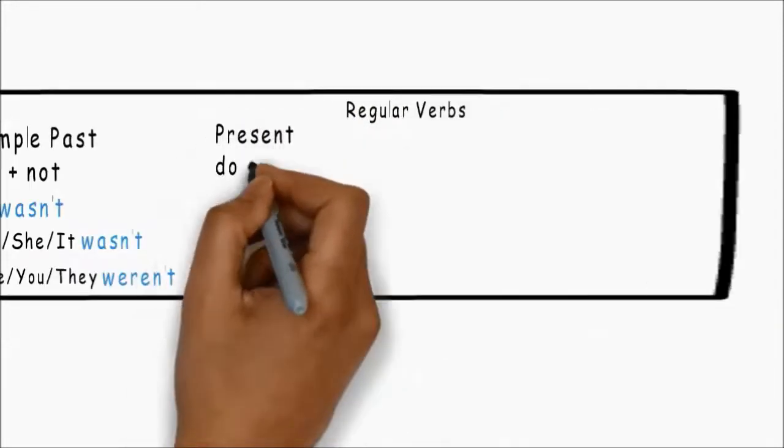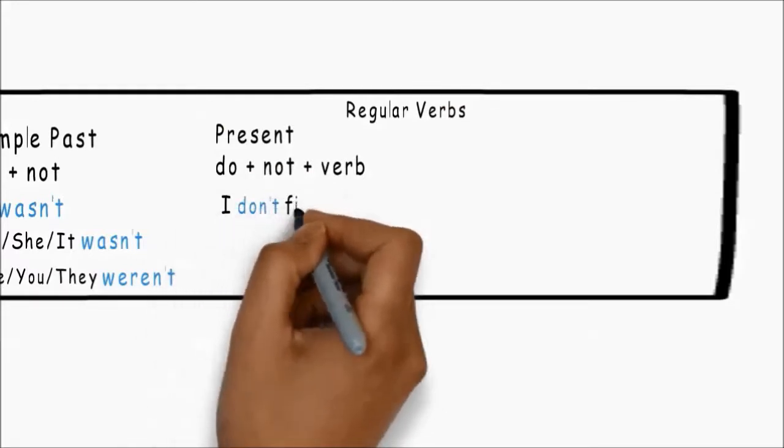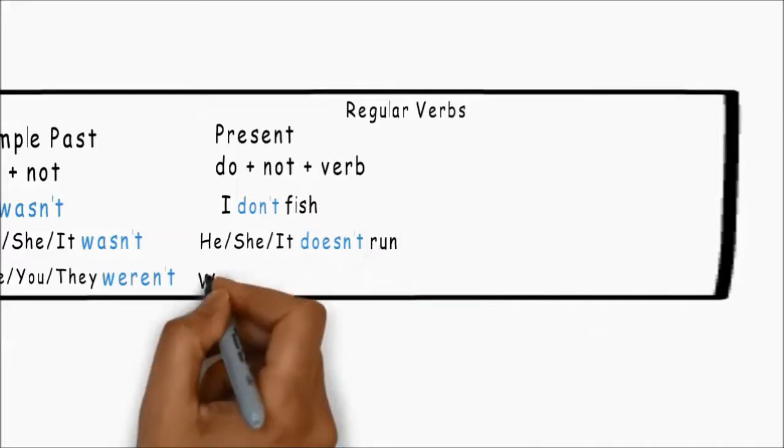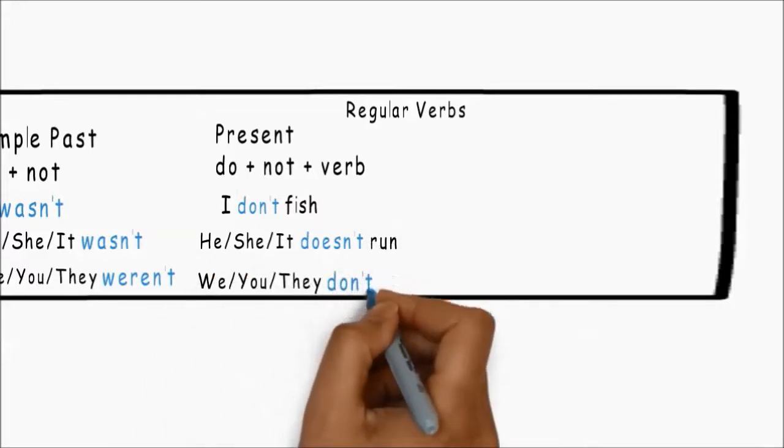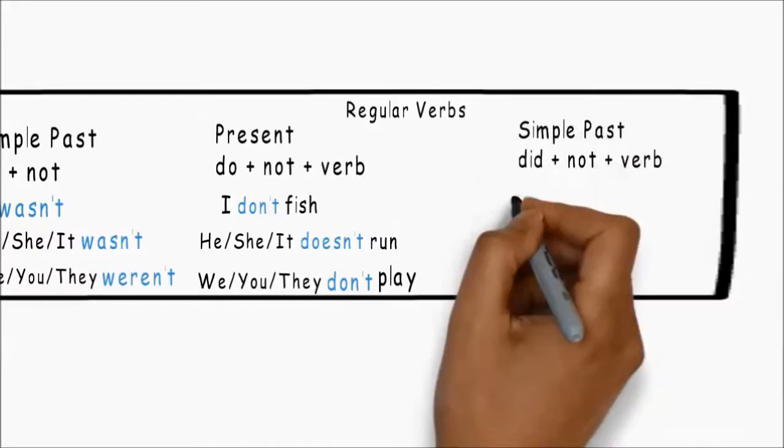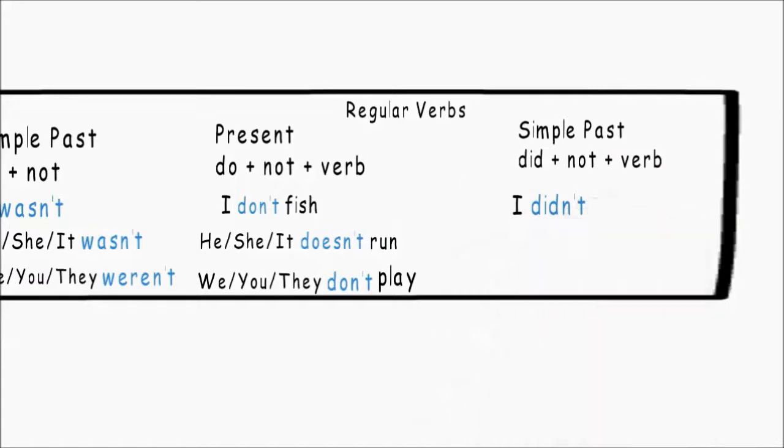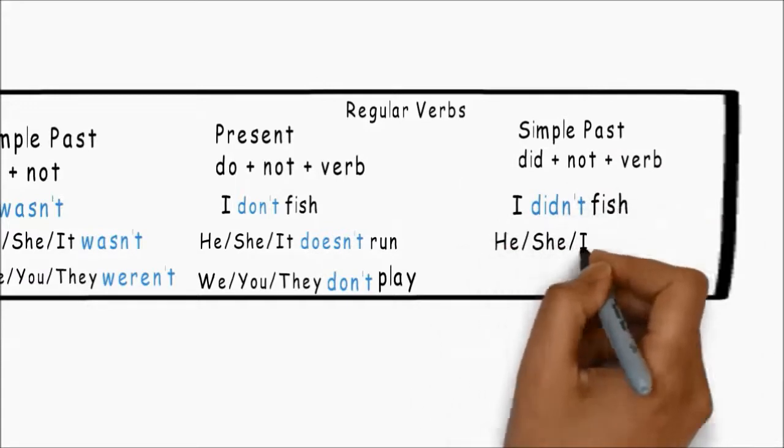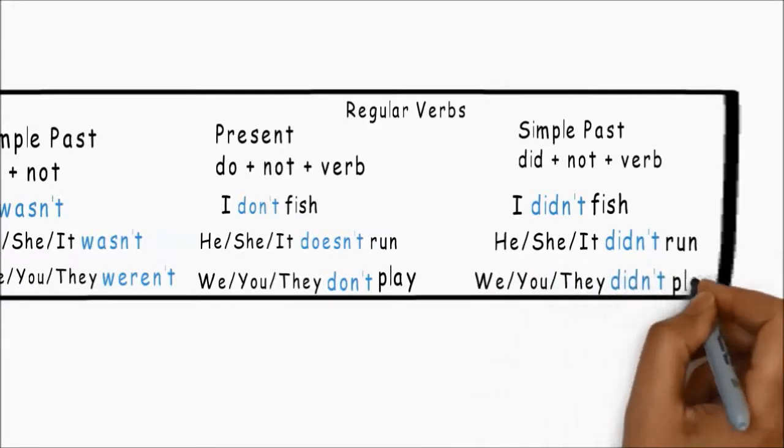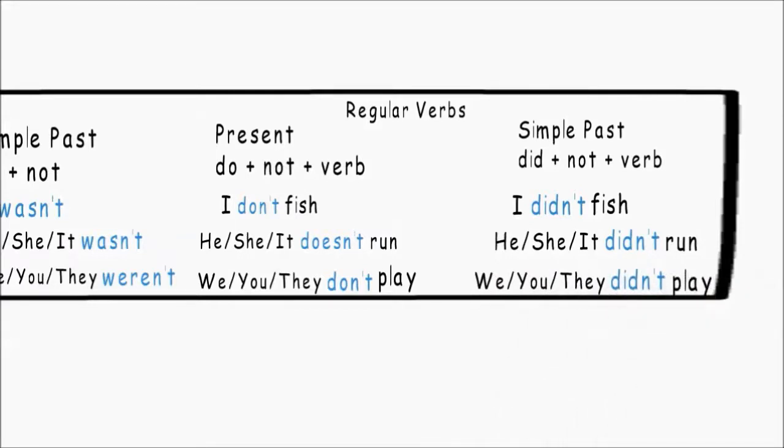Regular verbs, present tense, do plus not plus the verb. I don't fish. He, she, it doesn't run. You, we, they don't play. Now, simple past. I didn't fish. He, she, it didn't run. And we, you, they didn't play.